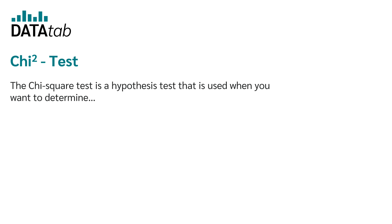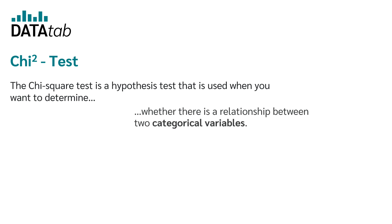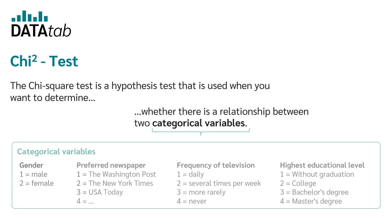The chi-square test is a hypothesis test that is used when you want to determine whether there is a relationship between two categorical variables or not. What are categorical variables?